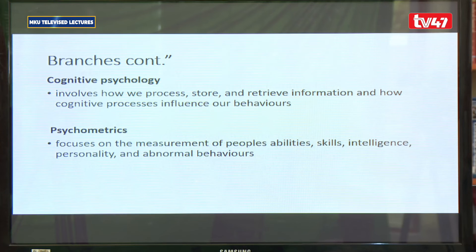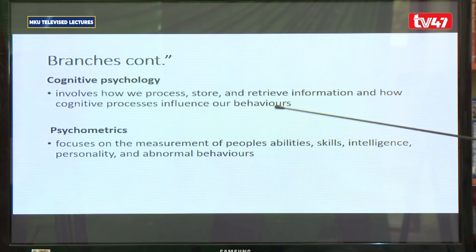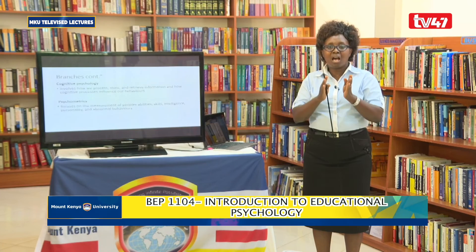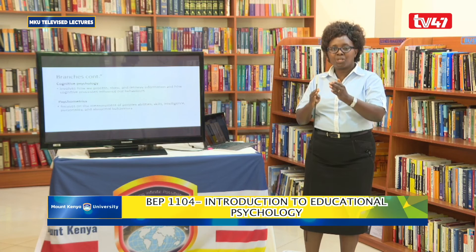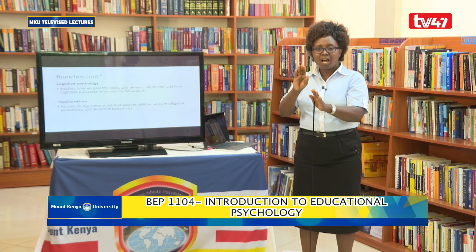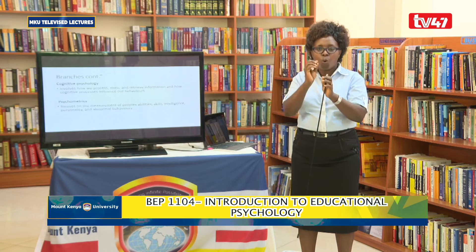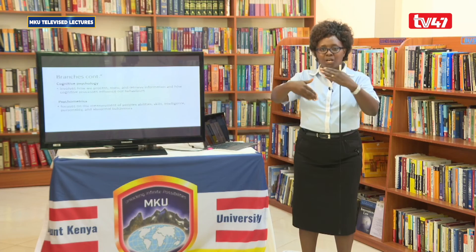Another branch is cognitive psychology — about the mental processes, how the brain operates, how we process, store, and retrieve information, and how these cognitive processes influence our behavior. In future lessons we shall look at how the brain processes information from sensory storage to short-term memory to long-term memory. Each one of us has what can be called a mental index card where similar information is stored together.